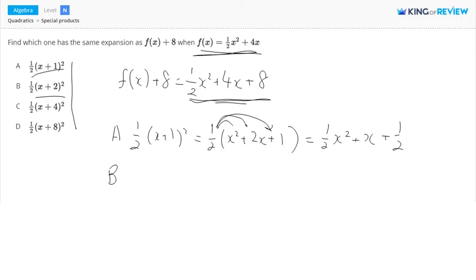What about option B? It says 1 half times x plus 2 squared. So that's going to be 1 half times x squared plus 4x plus 4. Then distribute that 1 half: 1 half x squared plus 2x plus 2.